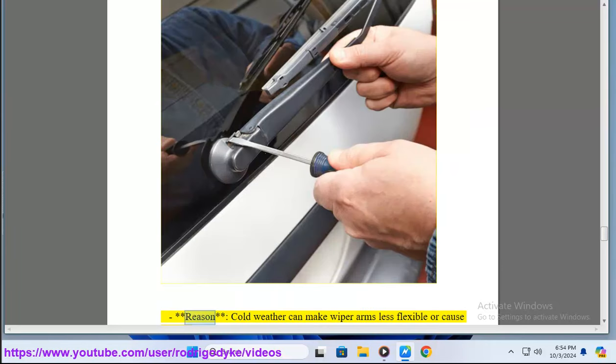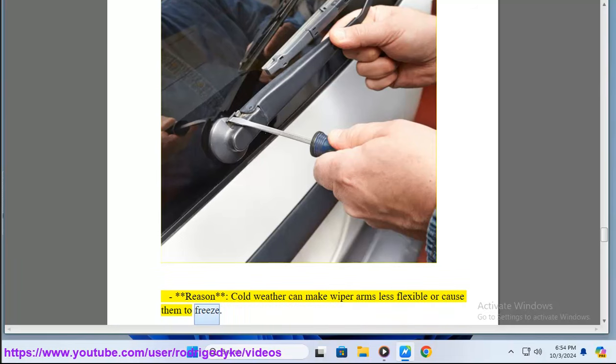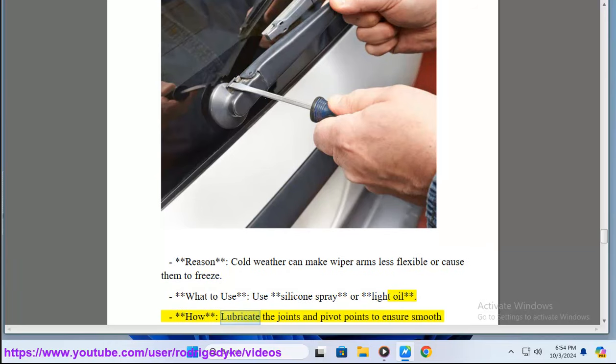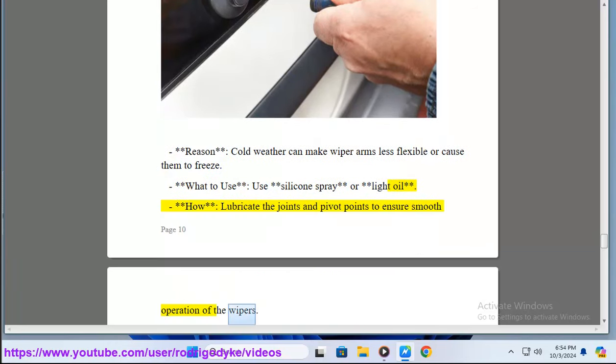12. Windshield Wiper Arms and Joints. Cold weather can make wiper arms less flexible or cause them to freeze. What to use? Use silicone spray or light oil. How? Lubricate the joints and pivot points to ensure smooth operation of the wipers.